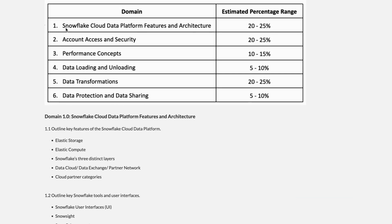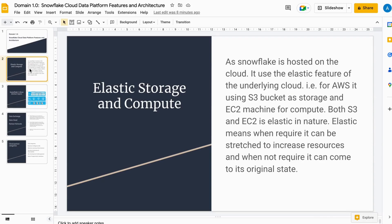As part of today's topic, we are going to cover: outline key features of the Snowflake Cloud Data Platform — elastic storage, elastic compute, Snowflake's three distinct layers, data cloud, data exchange, partner network platform, and cloud network categories.